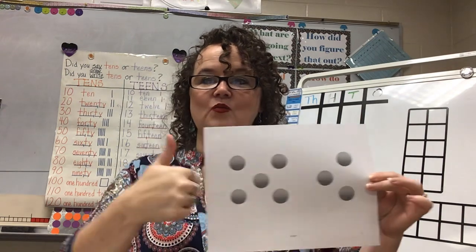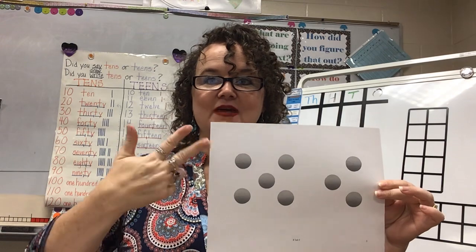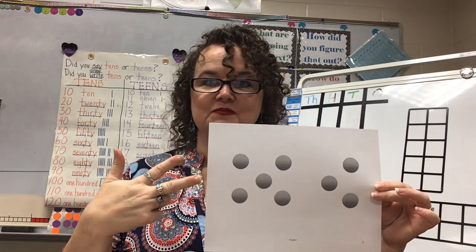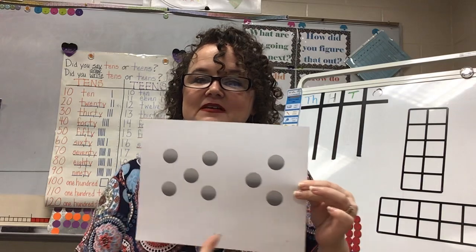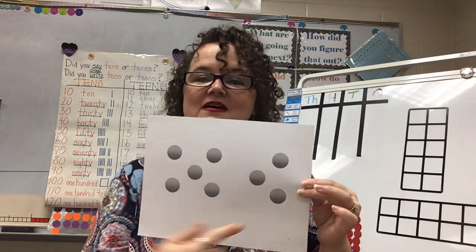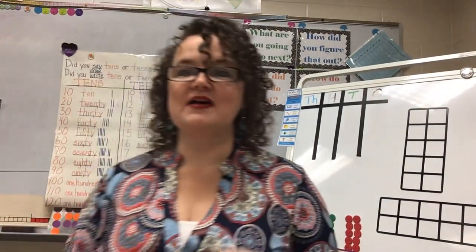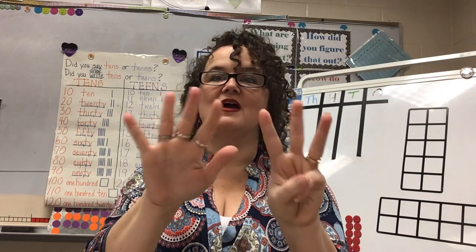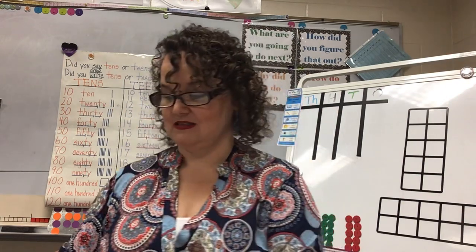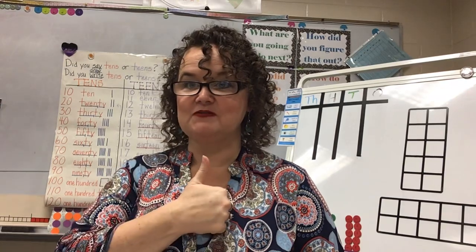So you might see one number, you might see two numbers, you might see three numbers. For this one, I see 5 and 3 and I know that makes 8 because I've shown 5 and 3 on my fingers before and I know that makes 8. Let's keep going. Remember you're looking to see if you see one number, two numbers, or three numbers.